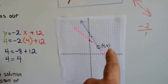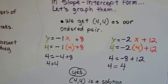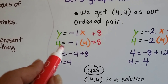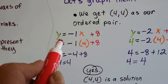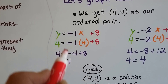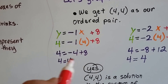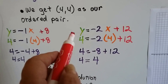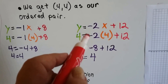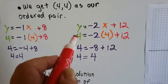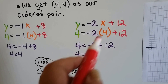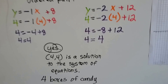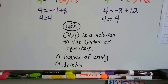So the ordered pair (4, 4) is the solution to both equations. Let's verify: plugging x = 4 and y = 4 into the first equation gives 4 equals negative 1 times 4 plus 8, which is negative 4 plus 8 equals 4. Yes, 4 equals 4 — it works! For the second equation: 4 equals negative 2 times 4 plus 12, which is negative 8 plus 12 equals 4. Yes, 4 equals 4 — it's a solution for the system of equations.